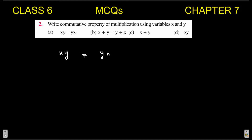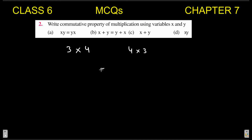In any order you multiply the numbers, the result or answer will be the same. For example, if you have two numbers 3 and 4, whether you do 3 × 4 or 4 × 3, your answer will be 12 in both cases. This property is known as the commutative property of multiplication.